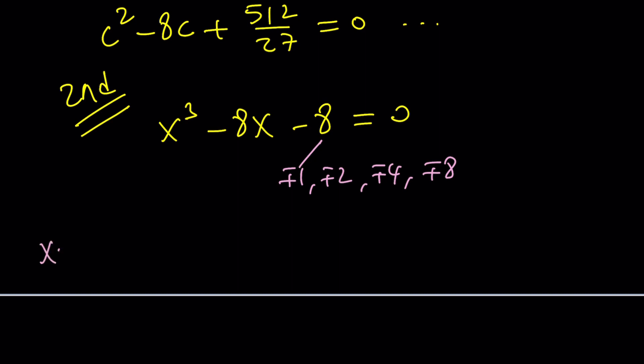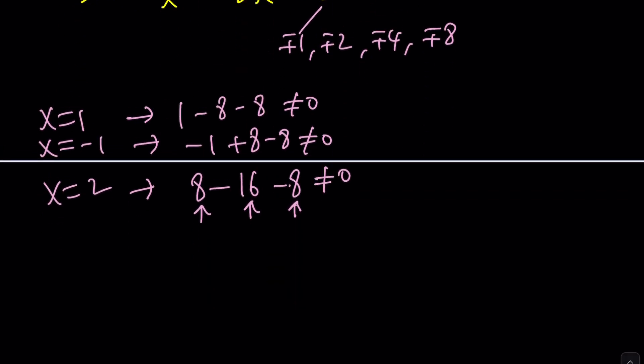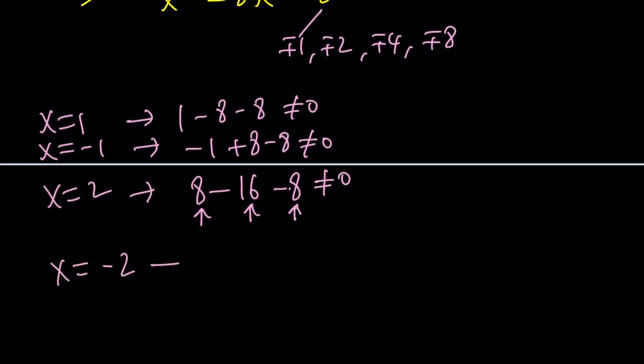I'm going to test x = 1. You can quickly plug it in: 1 - 8 - 8 obviously does not equal zero. If x = -1 it's -1 + 8 - 8, again does not equal zero. Pretty close but not zero. What about 2? Two cubed minus eight times two, sixteen minus eight does not equal zero either. But this should give you a clue. Eight, negative sixteen and eight. If the second eight was positive we would get a zero. Maybe we're really close to the answer.